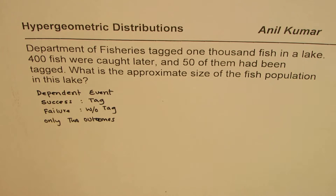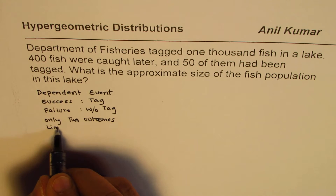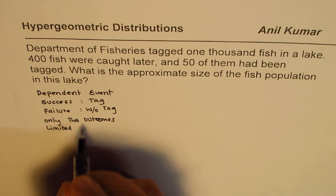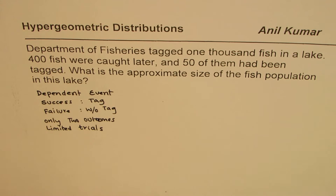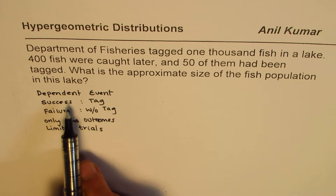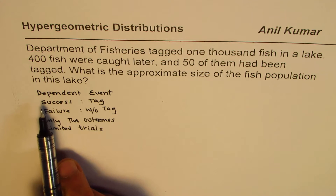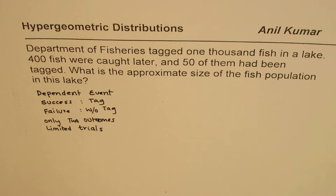So that defines that this is hypergeometric distribution, where we have a limited number of trials. These are the characteristics which identify whether a distribution is geometric, binomial, or hypergeometric. Hypergeometric is the one which is dependent. All others which you studied were independent. This is the dependent one, since every fish is different here.